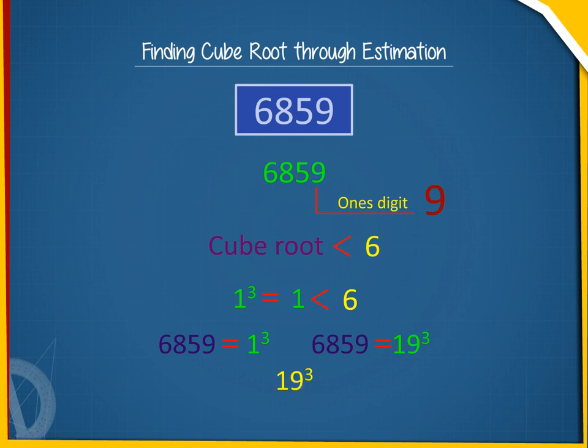Verification: 19 cubed equals 19 times 19 times 19 equals 6859.